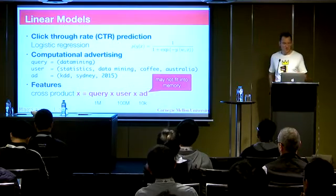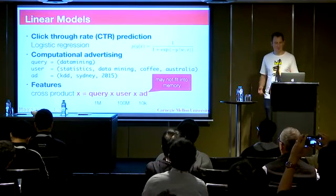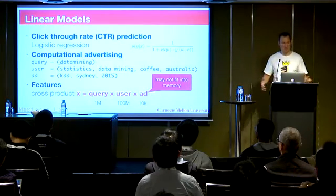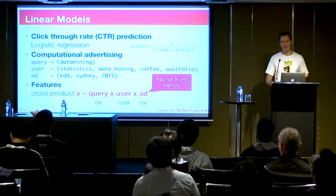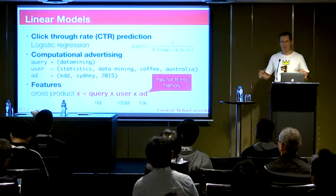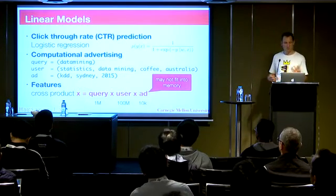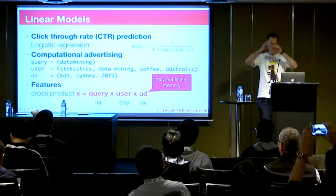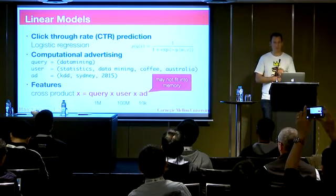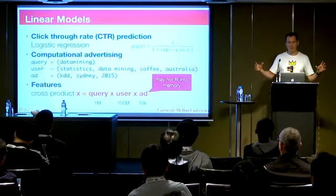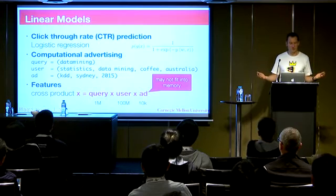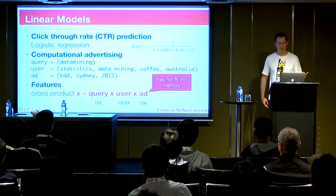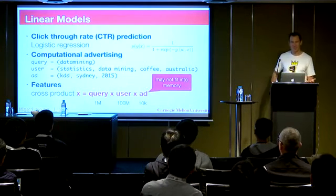Here's the simplest thing. We have click-through rate prediction — exactly the example I showed before. The query might be something like 'data mining,' the user profile includes statistics, data mining, coffee, Australia, and the ad is maybe KDD in Sydney. We get a rich set of features: query tensor user tensor ad. If you do this, you end up with something very high dimensional that won't fit in memory. With a million queries, 100 million users, and 10,000 ads — that's out of memory.